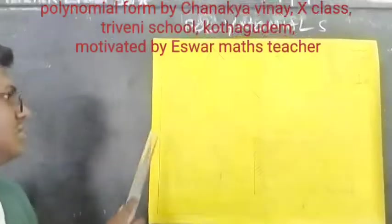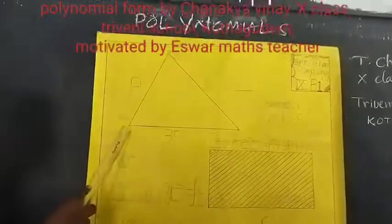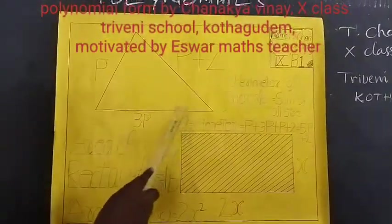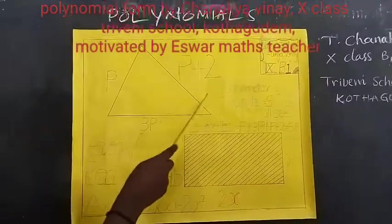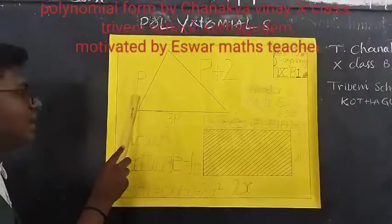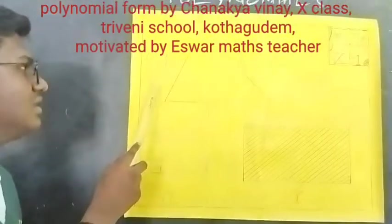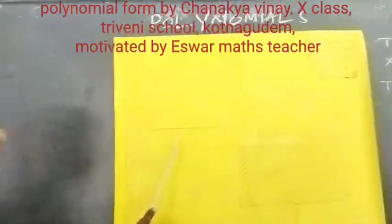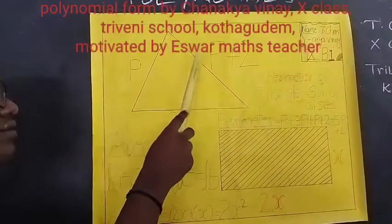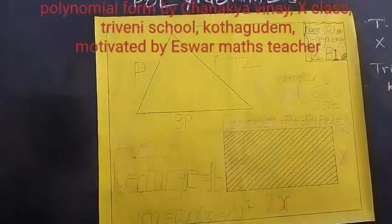Now I am taking a triangle where one side is P, another side is 3 times more than P, so it is 3P, and another side is 2 units more than P, so it is P plus 2.